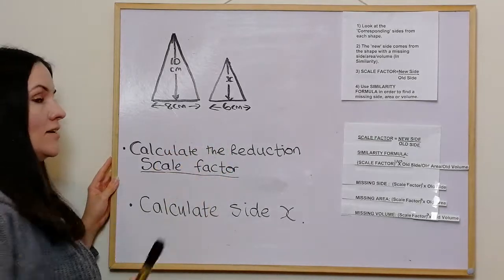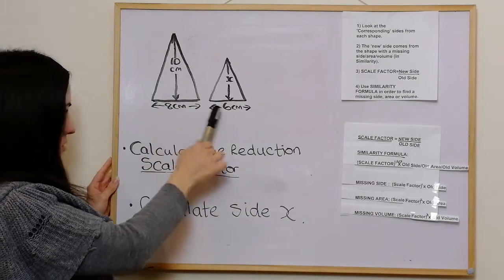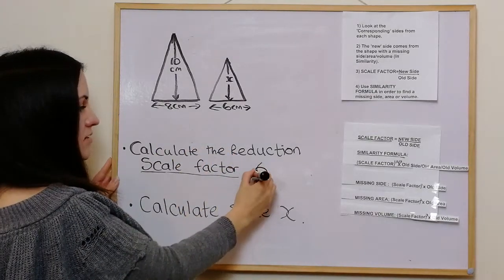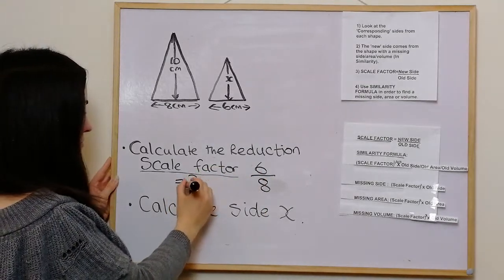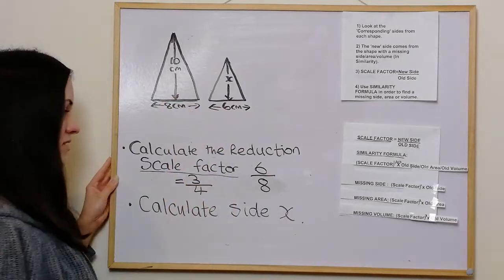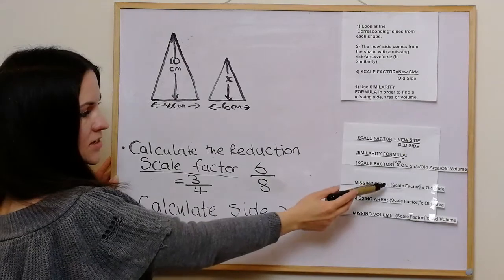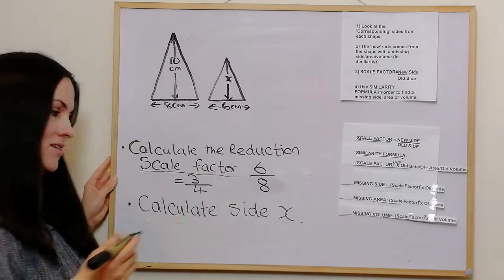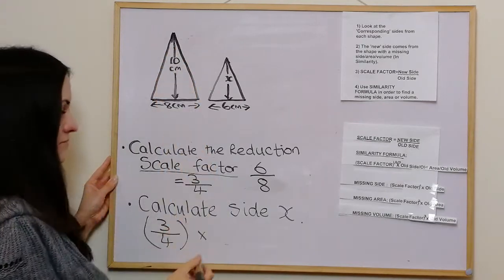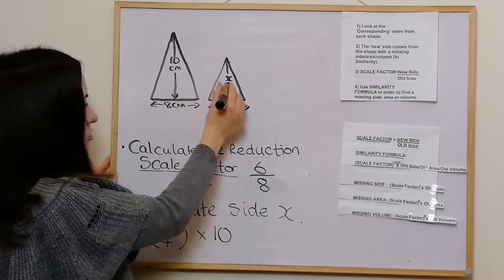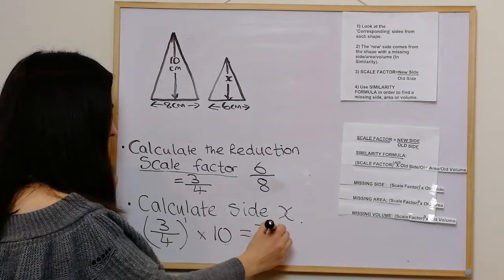This time we have two triangles — it can actually be any shape. The first thing we're asked to do is calculate the reduction scale factor, so it's new over old: 6 over 8, which simplifies to three over four. So this is essentially three quarters of this. When we're asked to calculate side x, we use the similarity formula: scale factor to the power of one times the old side. Scale factor is three over four, times old side 10, which gives 7.5 centimetres.